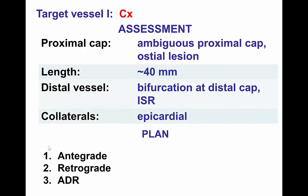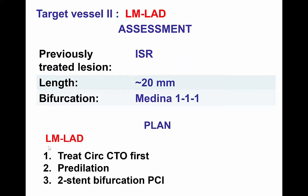Therefore, the plan was to perform an antegrade approach, leaving retrograde for a second stage. Because of the bifurcation of the distal cap, the decision was to avoid ADR if possible to avoid losing a side branch. As far as the left main-LAD bifurcation, the plan was to perform a two-stent strategy if we were able to recanalize the circumflex CTO first.